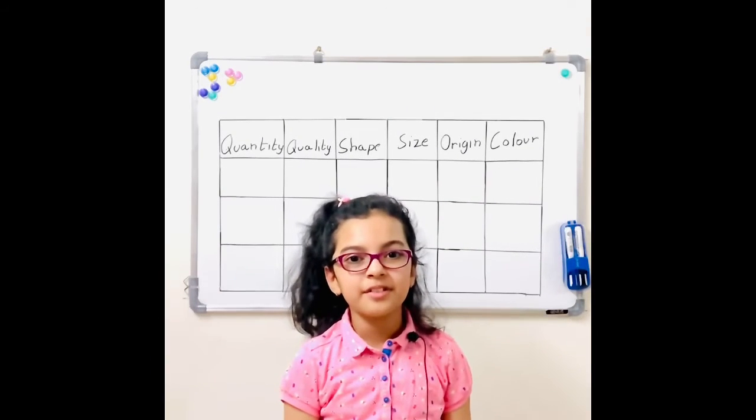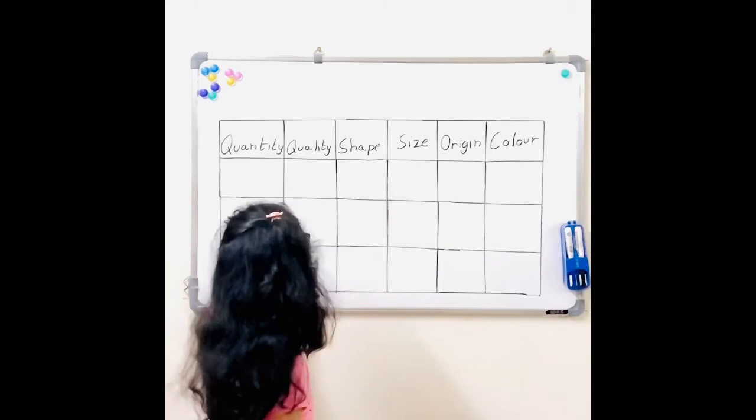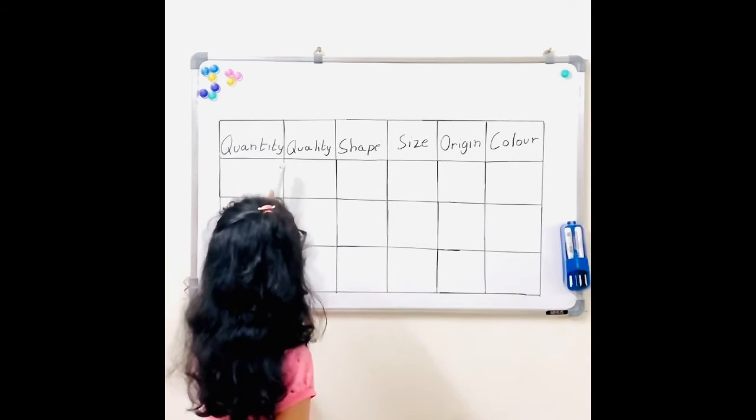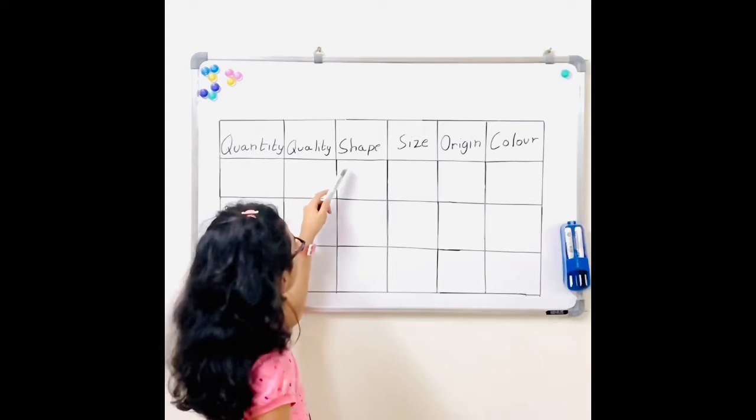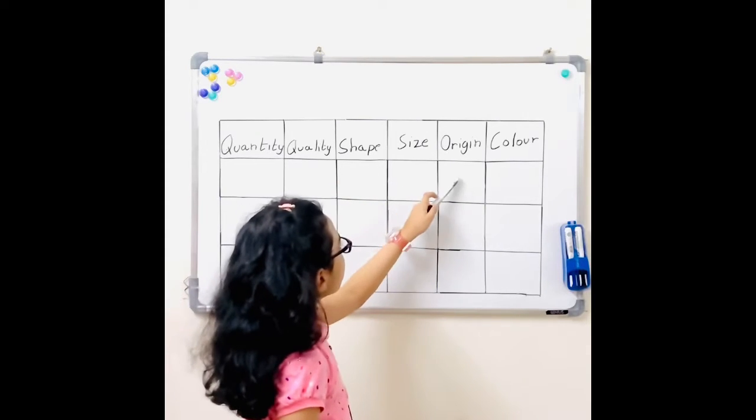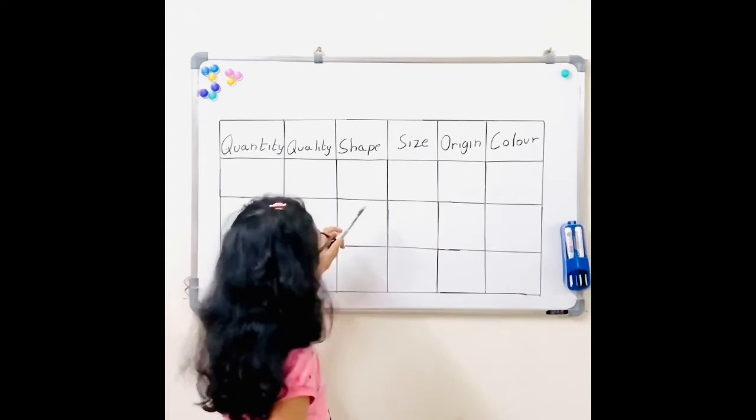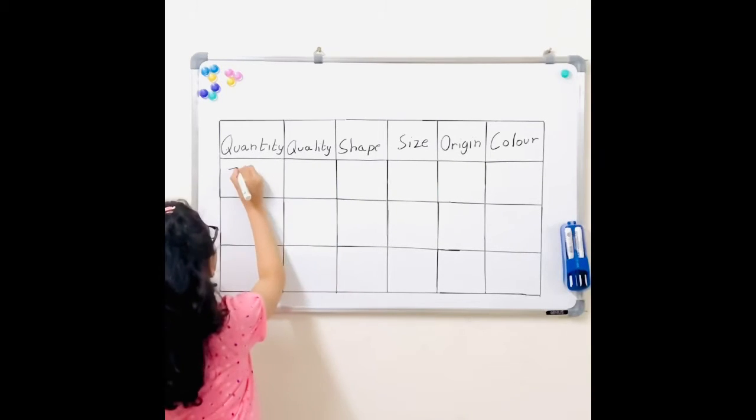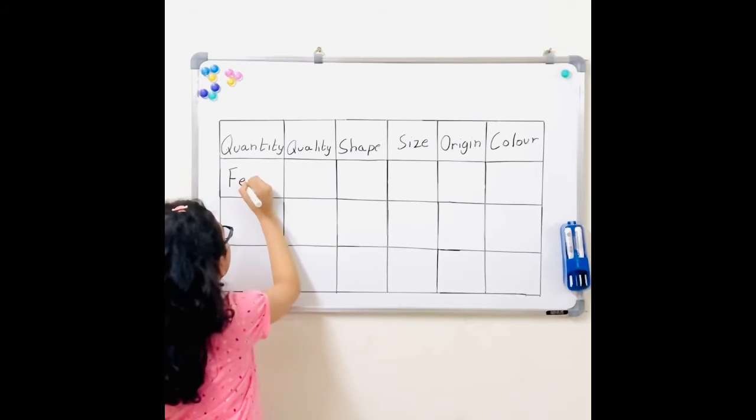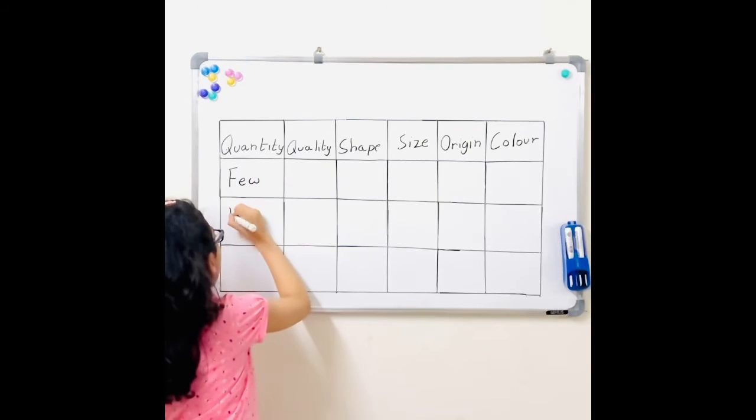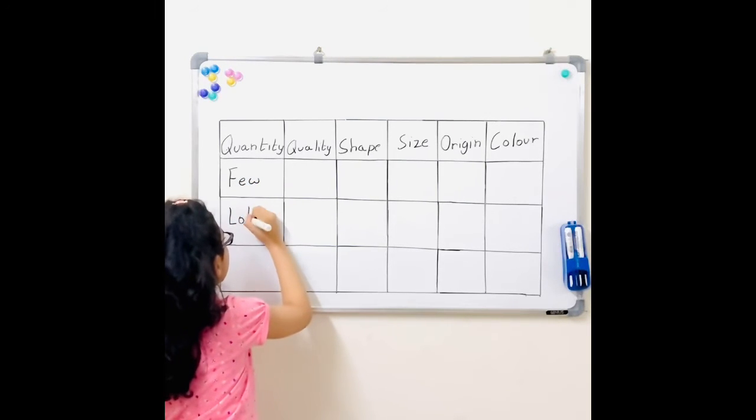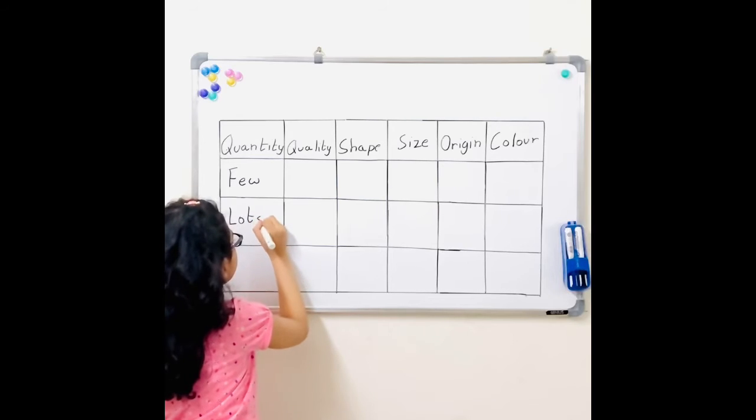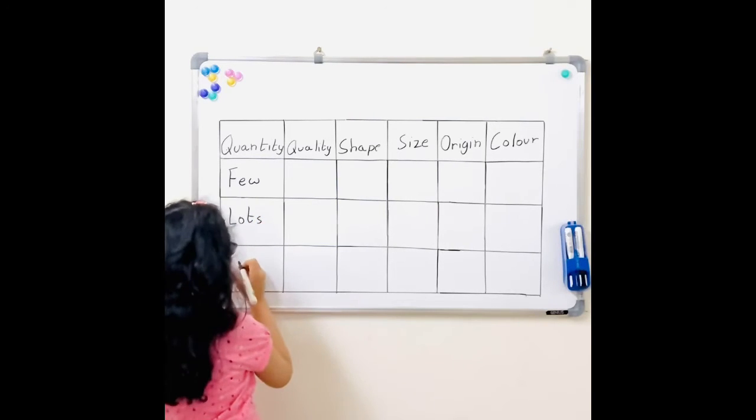Now guys, I'm going to fill in this table, which has the adjectives of quantity, adjectives of quality, adjectives of shape, size, origin, and color. So now I'll fill in this table. For quantity, it could be a few, lots, and less.